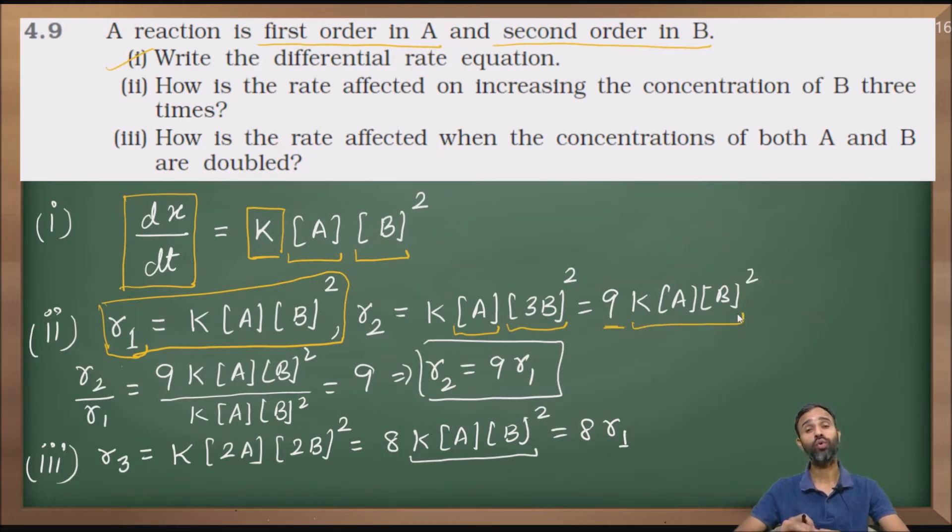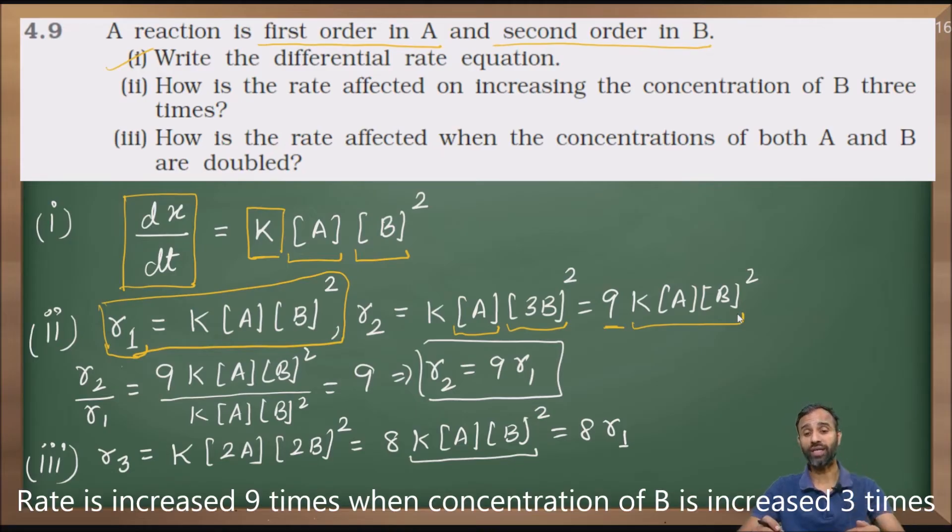Rate is increased nine times when concentration of B is increased three times. If concentration of B is increased three times, rate of reaction is increased by nine times. This is the second part of the question.